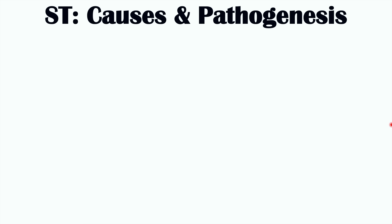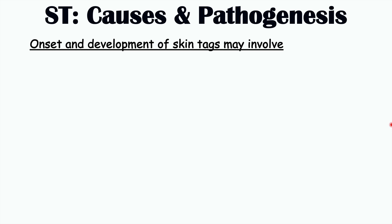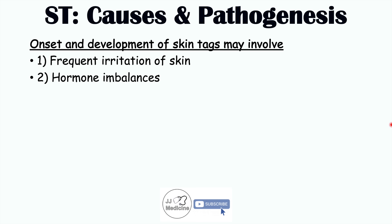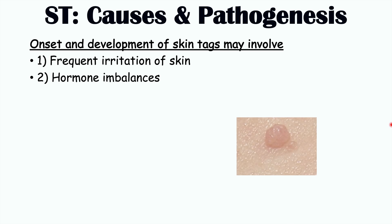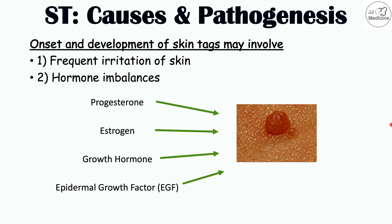The onset and development of skin tags is believed to involve either frequent irritation of the skin — especially in certain skin folds or rubbing of skin against clothing — or changes in hormone levels. Some of the hormones proposed include progesterone, estrogen, growth hormone, and epidermal growth factor. Higher levels of these hormones may lead to or increase the growth of skin tags.